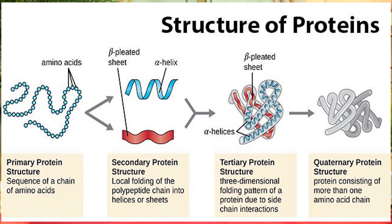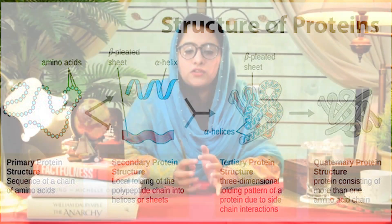The third structure is the tertiary structure. In this case, the polypeptide chain folds upon itself into a globular structure. This globular structure is held together by different bonds: ionic bonds, hydrogen bonds, and disulfide bonds.